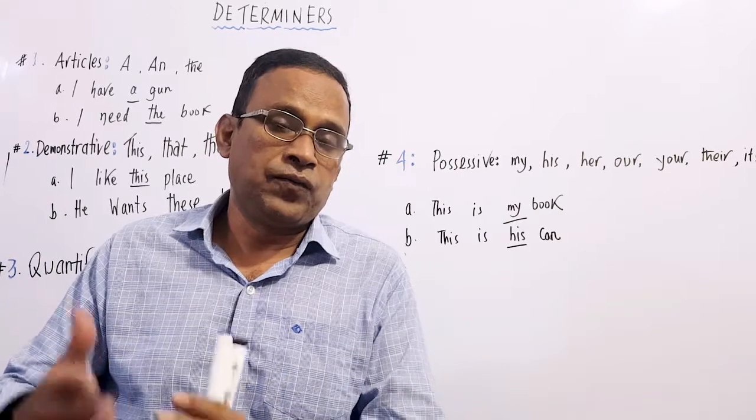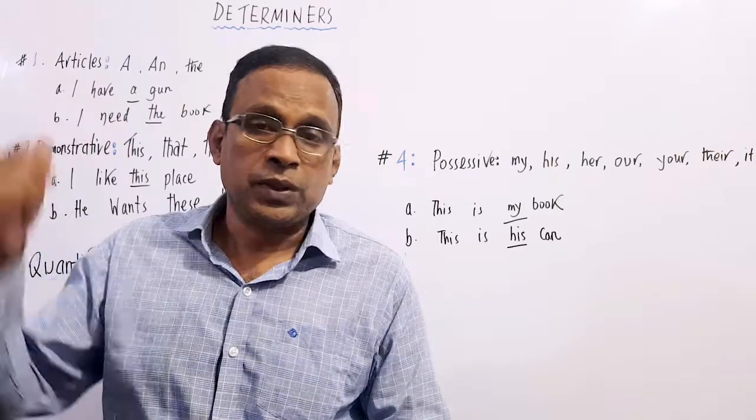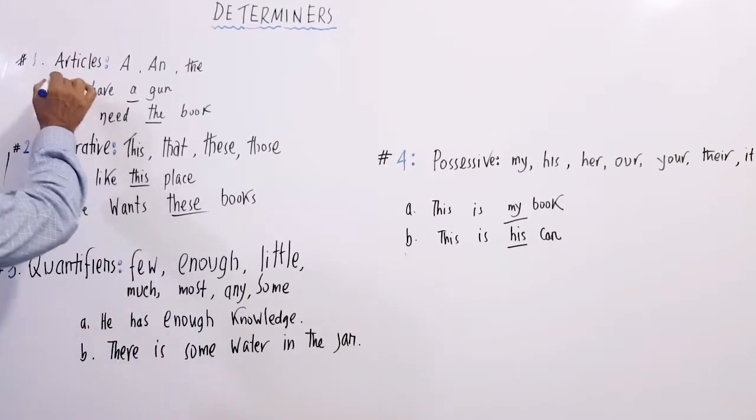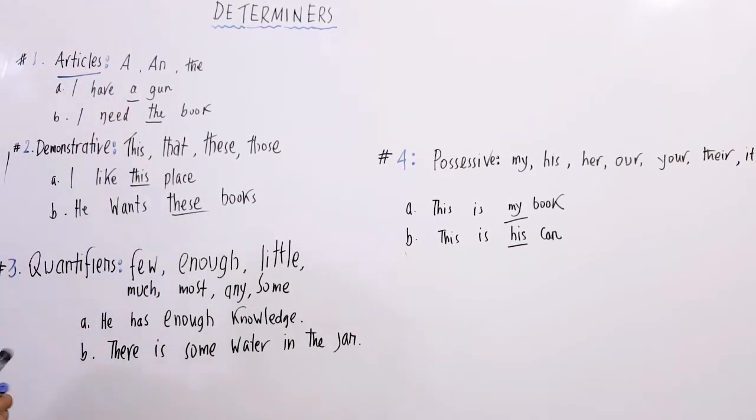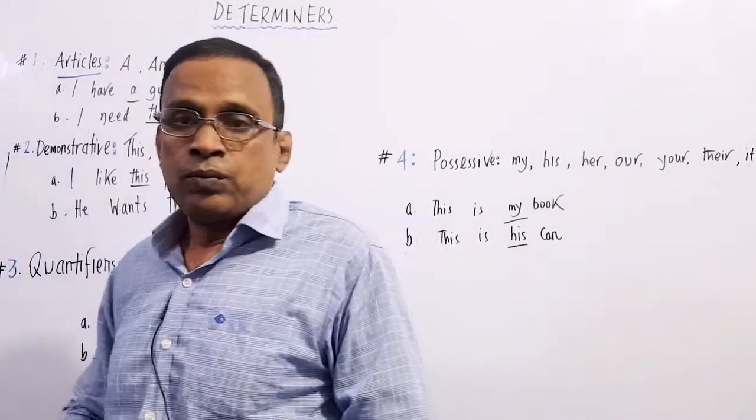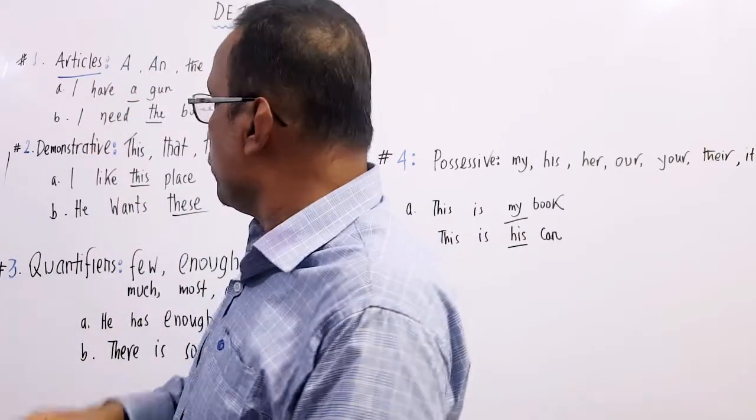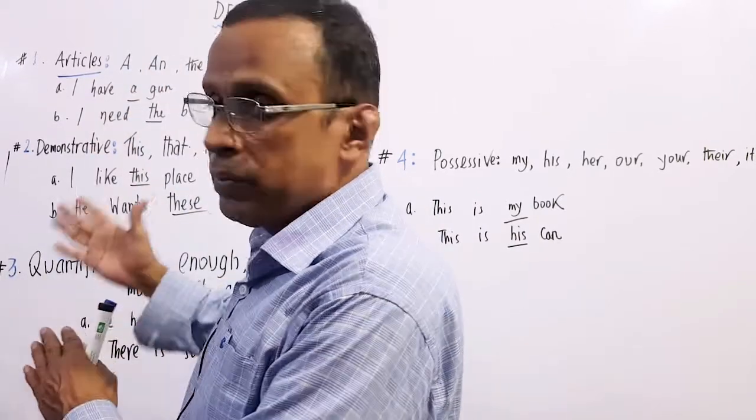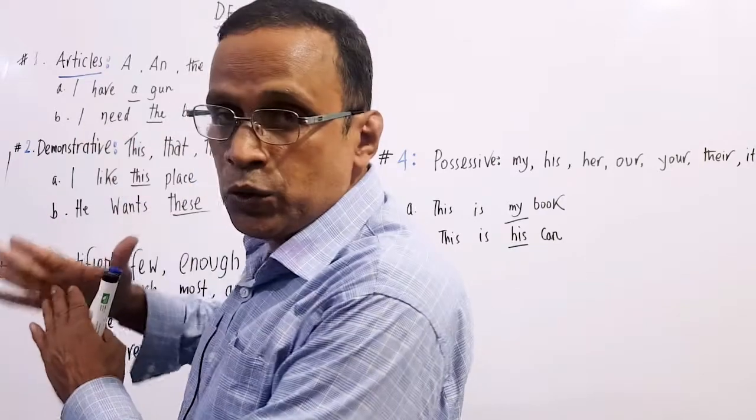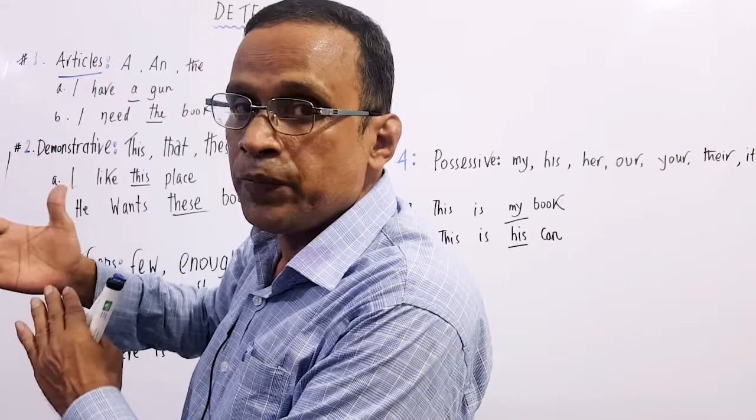Let's look at the determiners on the board. Number one: articles. In fact, one type of determiner is articles: a, an, and the. We usually use them if we speak about a noun. This article, 'the', is used to say about a noun specifically, not generally.